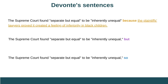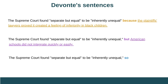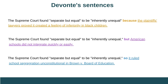And finally, the Supreme Court found separate but equal to be inherently unequal — so it ruled school segregation unconstitutional in Brown v. Board of Education.